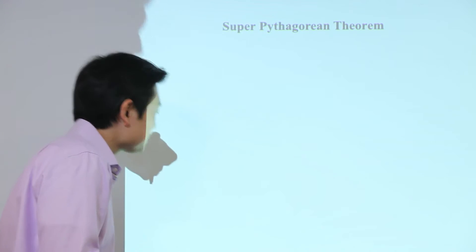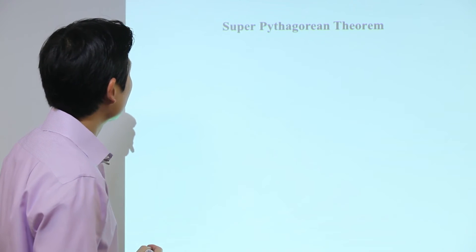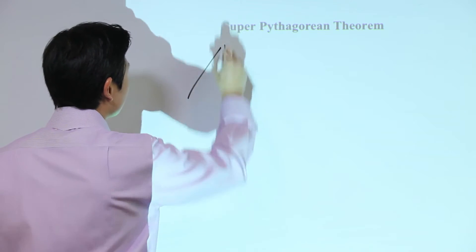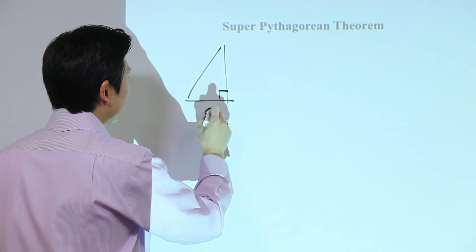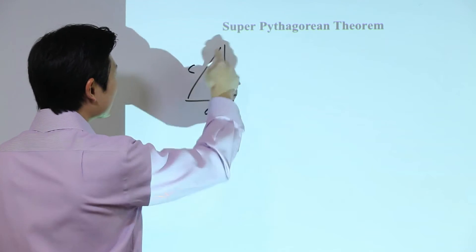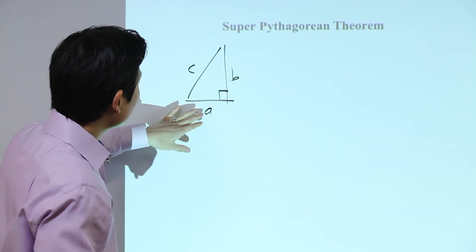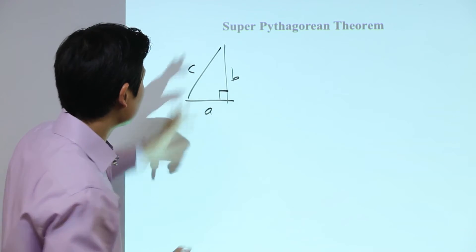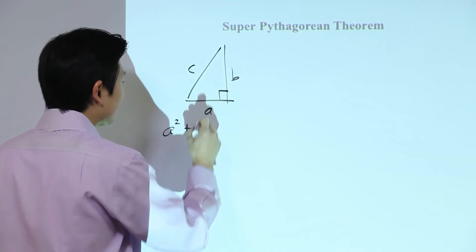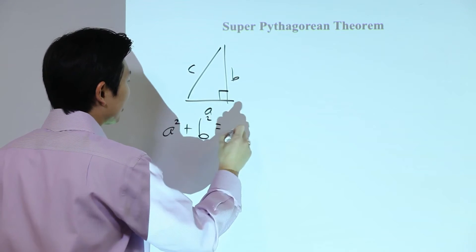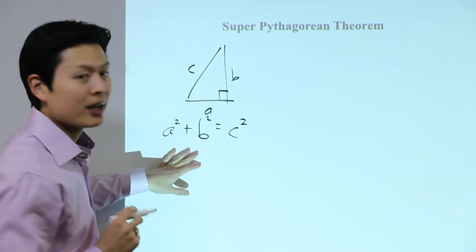Let me first introduce the Pythagorean theorem, and hopefully you guys have seen this before. When we have a right triangle with legs a and b, and the longest length in this figure is c — the hypotenuse — the relationship among a, b, and c is: one leg squared plus the other leg squared equals the hypotenuse squared. This is the Pythagorean theorem.